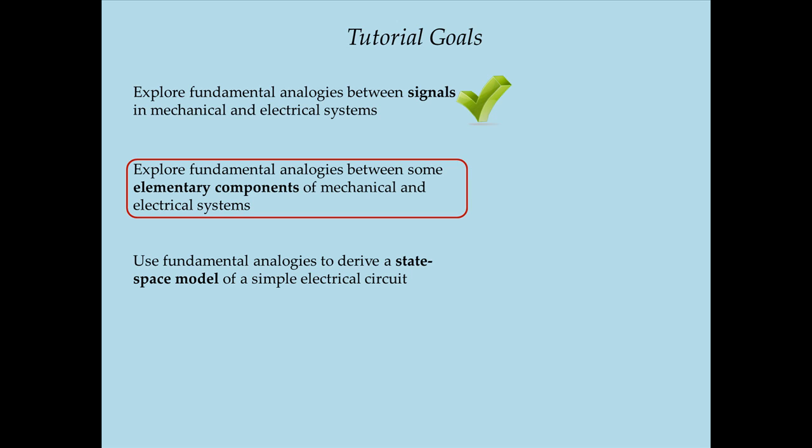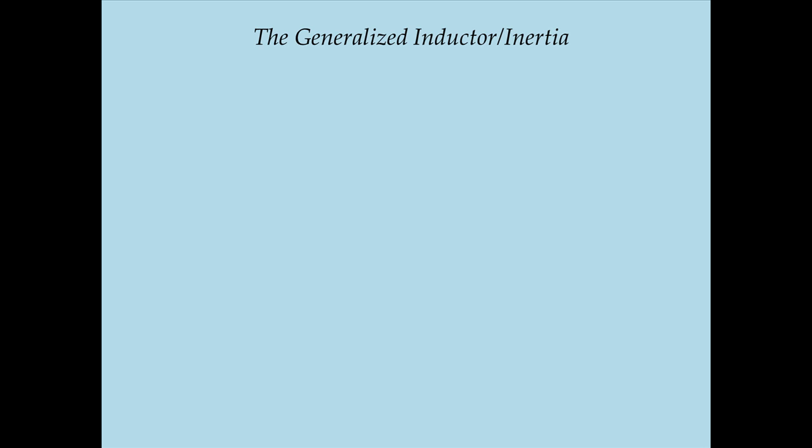With these analogies established, we can explore the elementary components of mechanical and electrical systems: masses, inertias, springs, and dampers on the mechanical side; inductors, capacitors, and resistors on the electrical side. We introduce the concept of the generalized inductor, also known as a generalized inertia — a generic component that represents a translational mass, a rotational inertia, or an inductor in an electrical system.